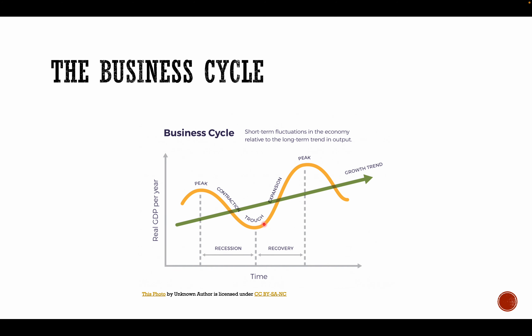Soon after the recession comes what we call the recovery — a little bit of rise in GDP again. It's like a cycle: it was at peak, then it slowed down, then went all the way down to a slump or depression, and now GDP — output in the economy — is starting to rise slowly. This upswing or recovery will soon lead to expansion and growth, and then the cycle will continue.